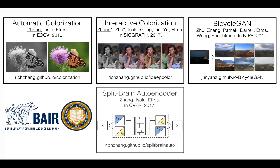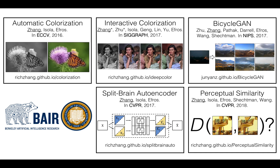In summary, this thesis explores the use of deep networks for graphics tasks. In solving the seemingly boutique task of colorization, we find that we actually make unexpected progress in machine learning and graphics, namely the problems of unsupervised learning and predicting human perceptual similarity.